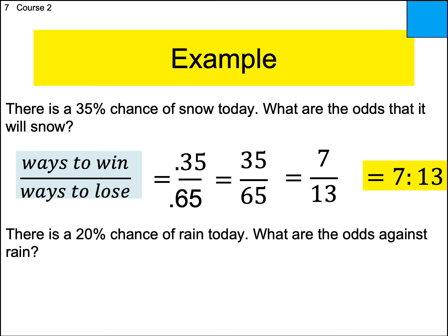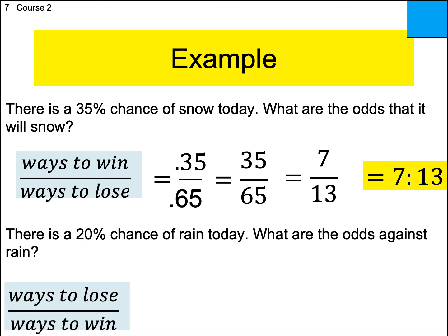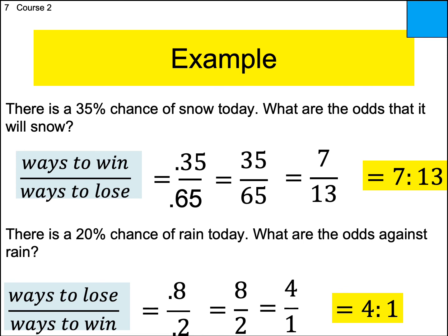The next one is odds against — lose over win. You're given 20% chance of rain, which defines winning. So 0.2 goes on the bottom, and 0.8 goes on the top. Move the decimals: eight over two. Reduce: four over one, or in colon form, four to one. Four chances it will not rain, one chance it will rain. So it's likely not going to rain today — four to one odds against.